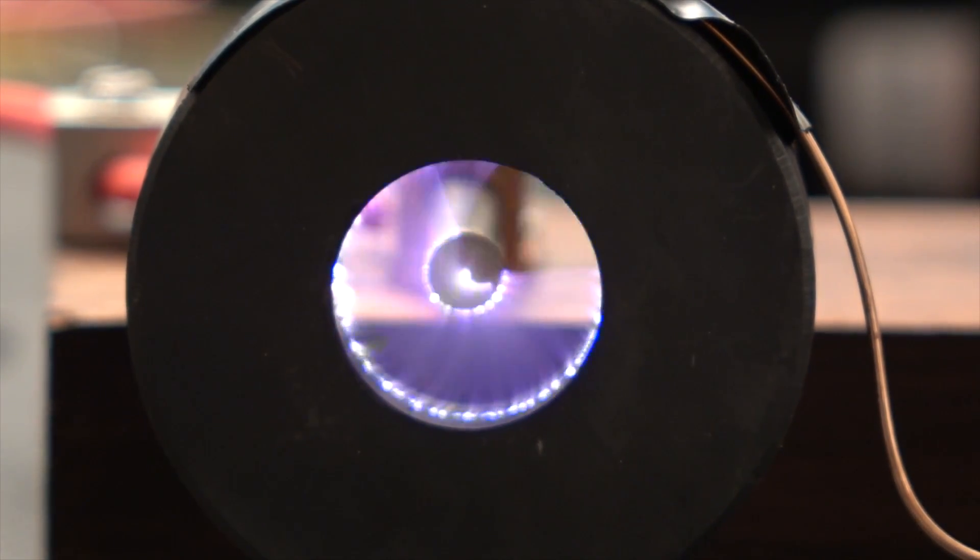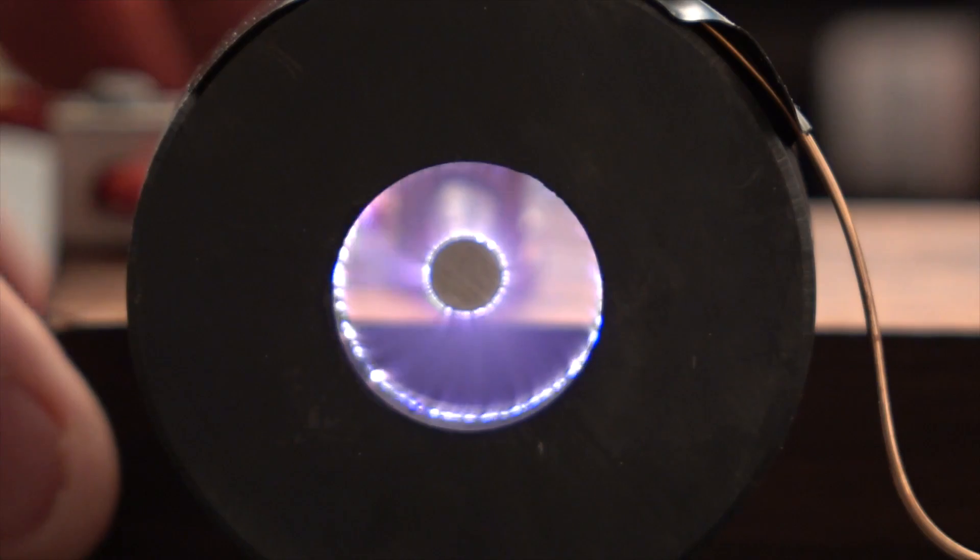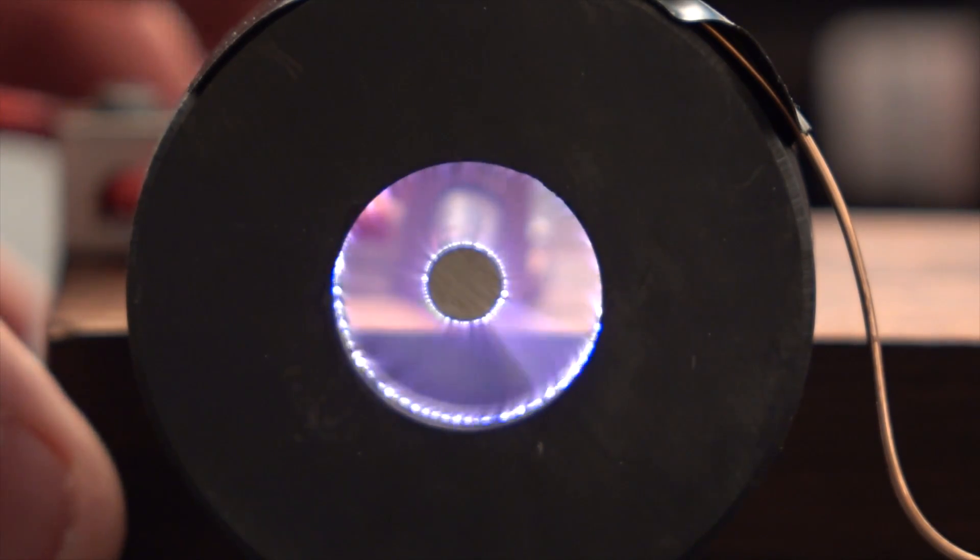So the reason that the arc rotates like this is because there is a Lorentz force acting on it. A Lorentz force is the force that a magnetic field applies to a moving electric charge. The current flowing through the arc is interacting with the magnetic field from the magnet.